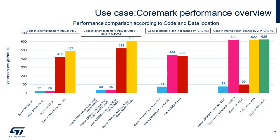When dCache1 is enabled, the performance increases a lot but is still limited by code and data sharing both on the SAHB bus and in the dCache1. The best performance of 487 CoreMark is achieved when data is in SRAM3; code and data still share the SAHB bus but dCache1 is dedicated to code storage only. Code accessible through FMC could advantageously be cached by iCache through iCache address remapping, which would split code and data traffic between the CAHB and SAHB buses.